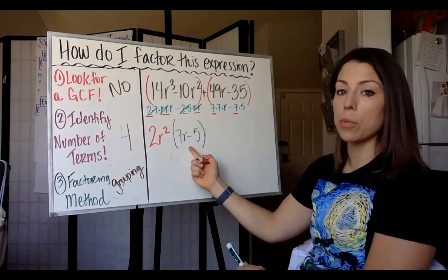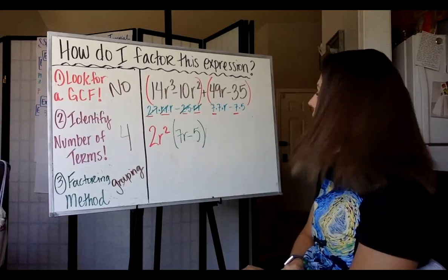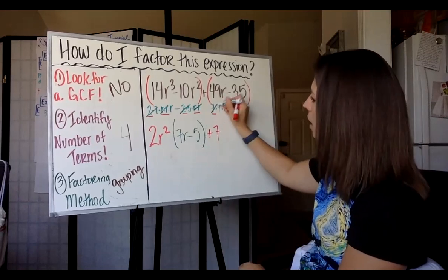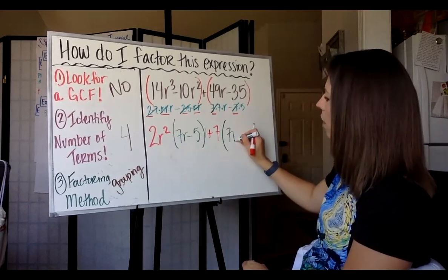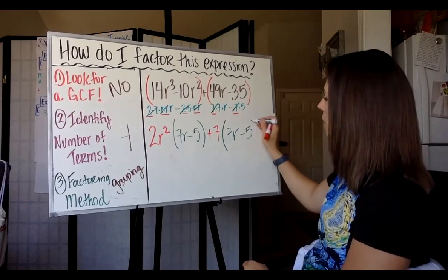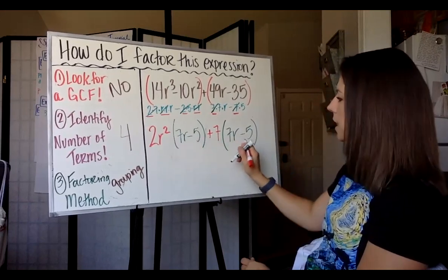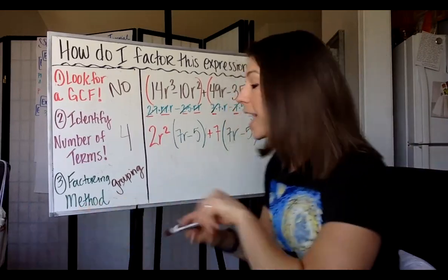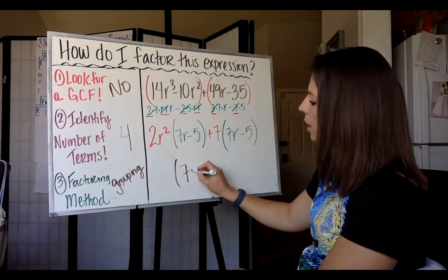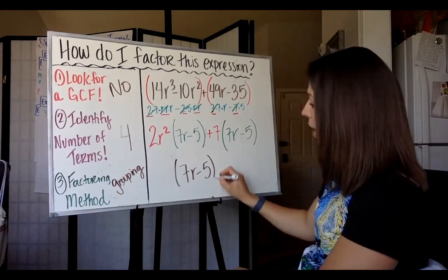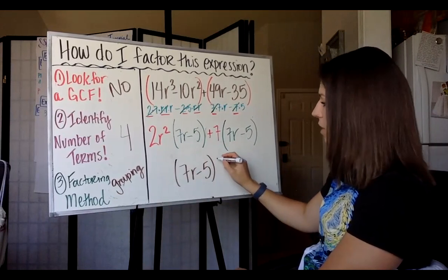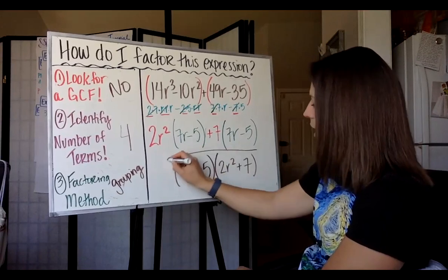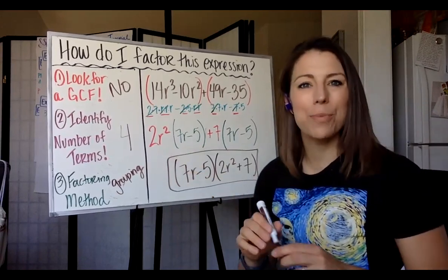This is called the common binomial factor — our goal is to get the same binomial in both groups. When we factor out plus 7 from the second group, we're left with 7R minus 5 as well. Since both groups share the common binomial factor 7R minus 5, we can write our final answer: 7R minus 5 times 2R squared plus 7. That's your final answer for factor by grouping.